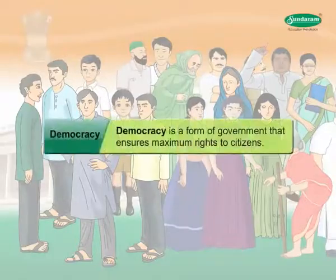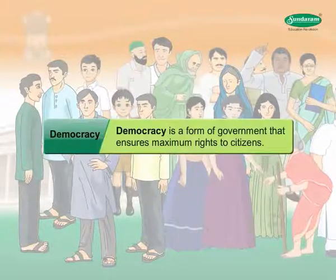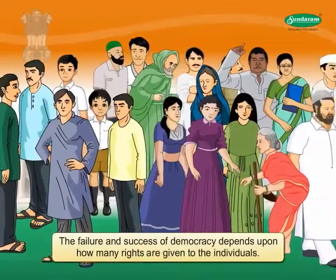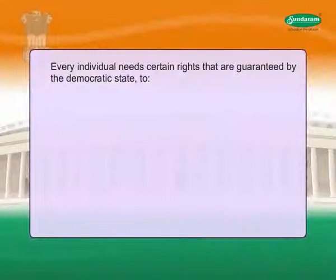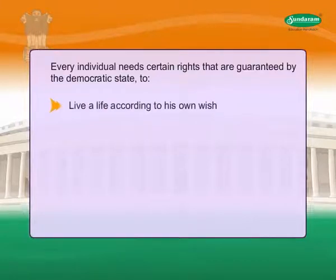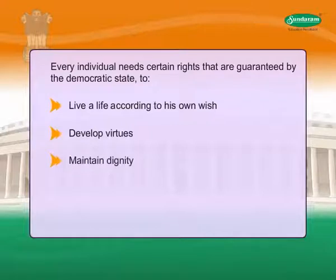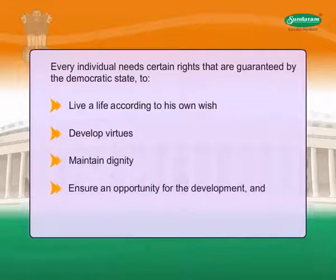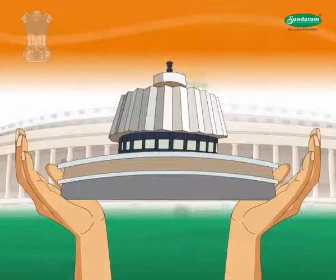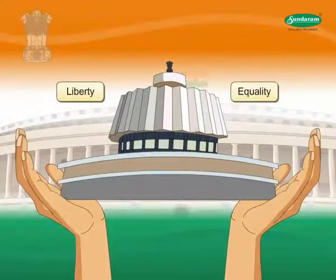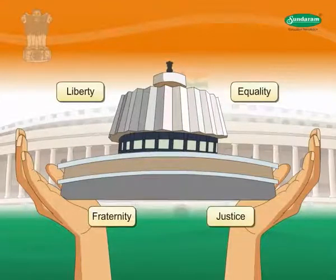Democracy is a form of government that ensures maximum rights to citizens. The failure and success of democracy depends upon how many rights are given to the individuals. Every individual needs certain rights guaranteed by the democratic state to live a life according to his own wish, develop virtues, maintain dignity, ensure an opportunity for development, and participate in the political process. Rights of the individual can control the dictatorial tendency of the state. Protection of values like liberty, equality, fraternity, and justice is possible through rights.